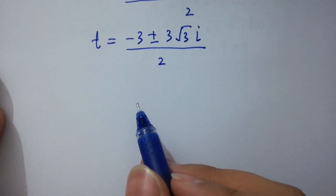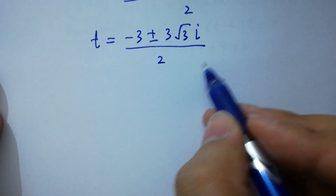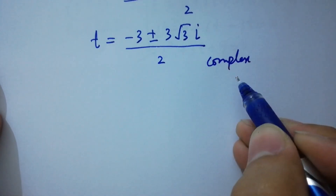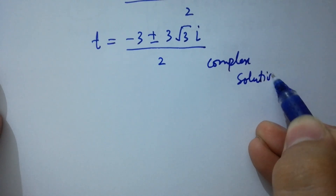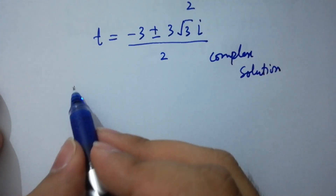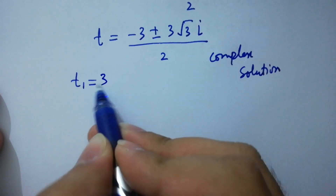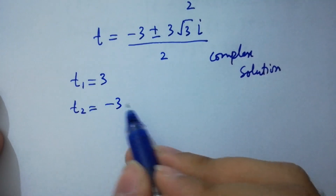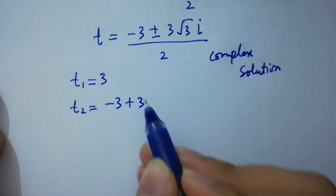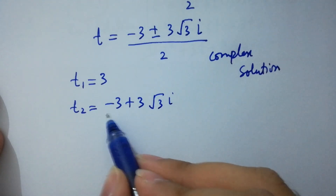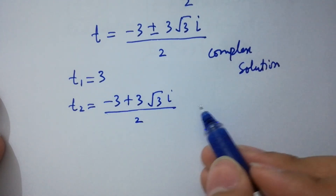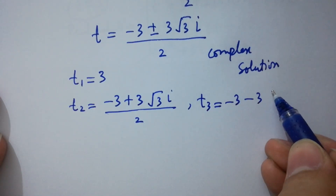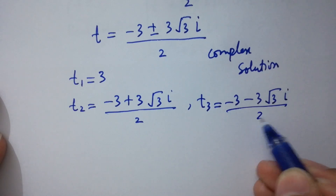So we have three solutions. This is our complex solution. T1 equals 3, T2 equals minus 3 plus 3 square root of 3 i, over 2, and T3 equals minus 3 minus 3 square root of 3 i, over 2.